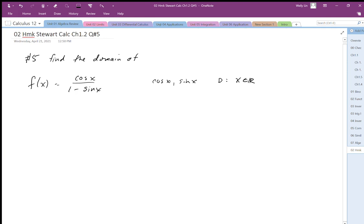We do also have to consider the other restrictions, and one of them would be the denominator not equal to 0. That means that 1 minus sin x cannot equal 0. When sin is equal to 1, the denominator is equal to 0, so sin x cannot equal 1.